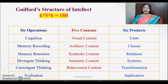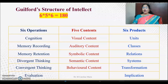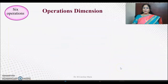The six operations are: cognition, memory recording, memory retention, divergent thinking, convergent thinking, and evaluation. All these six activities focus on either visual content, auditory content, symbolic content, semantic content, or behavioral content, and they produce: units, classes, relations, systems, transformation, and implication.